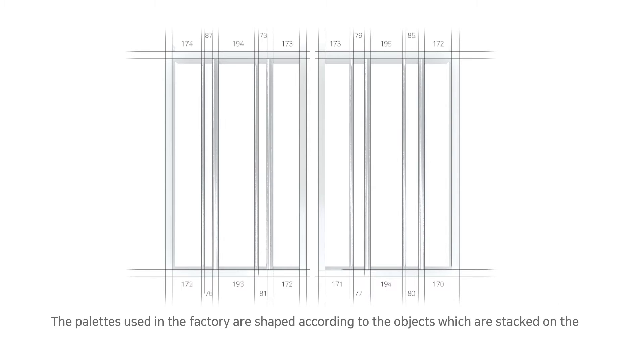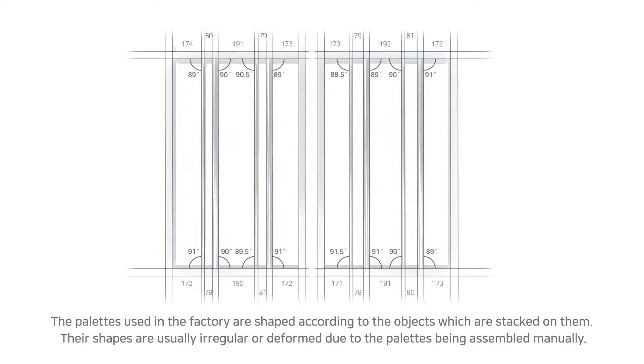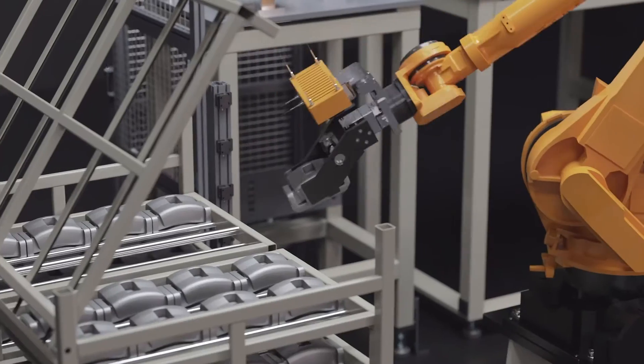The pallets used in the factory are shaped according to the objects which are stacked on them. Their shapes are usually irregular or deformed due to the pallets being assembled manually.